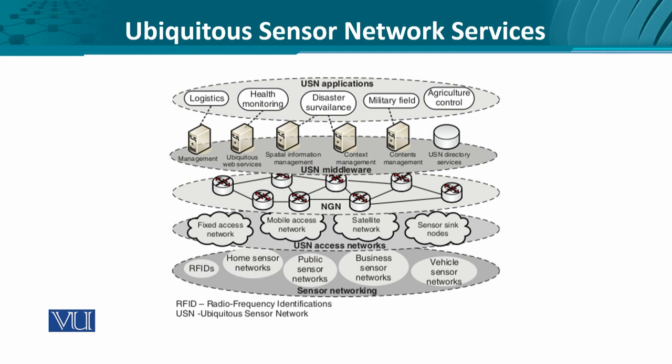On top of the middleware is the application layer, with applications in military, logistics, supply chain, health, and machine condition monitoring — a very important field in Industry 4.0. This means that ubiquitous sensor network services are going to be something very interesting that we will see in the years to come.